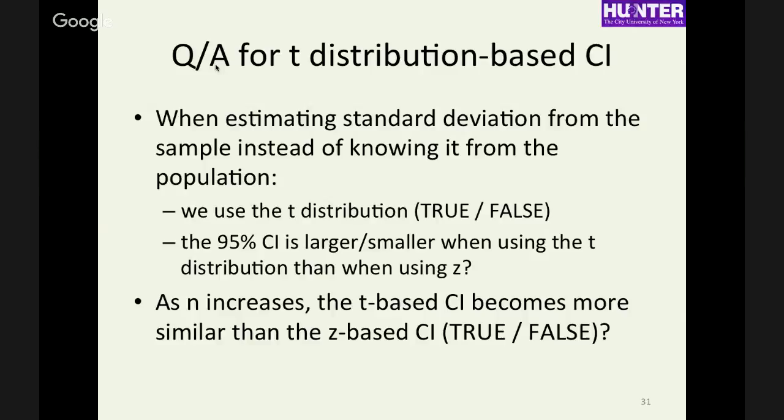When estimating standard deviation from the sample instead of knowing it from the population, you use the T distribution? Yeah, true, that's when we use it. Is the 95% confidence interval going to be larger or smaller when using the T distribution rather than when using Z? Larger, that's right. Yeah, the tails are fatter on the T distribution. And as N increases, the T-based confidence interval becomes more similar to the Z-based confidence interval. True. Good.